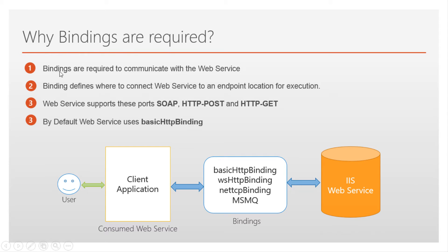Why are bindings required? Bindings are required to communicate with the web service. Binding defines the way to connect a web service to an endpoint location for execution. Web service supports these protocols: Simple Object Access Protocol (SOAP), HTTP POST, and HTTP GET. By default, web services use basic HTTP binding. The user can communicate with the web service through the client application by using these bindings. Bindings define the location or endpoint where the web service is located for execution of the code.